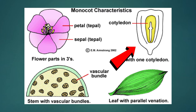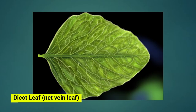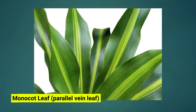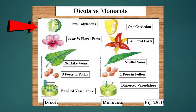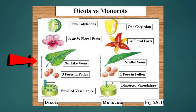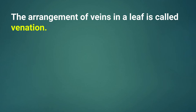The stem shows vascular bundles and the leaf shows parallel venation. Here we're showing a picture of the net vein leaf, which has lots of different patterns. And here is a picture showing the parallel vein leaves, which belong to the monocotyledonous plant, along with a fibrous root system and one cotyledon. The arrangement of veins in a leaf is called venation.